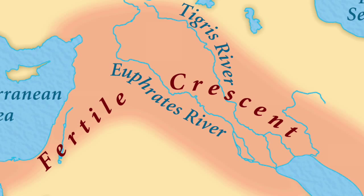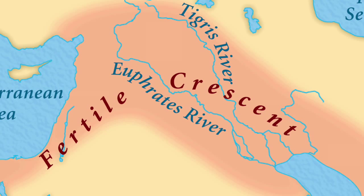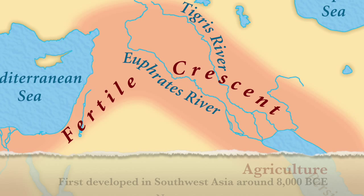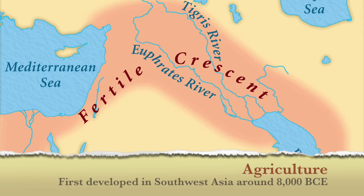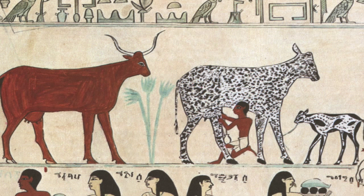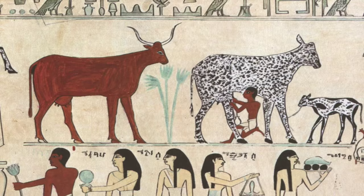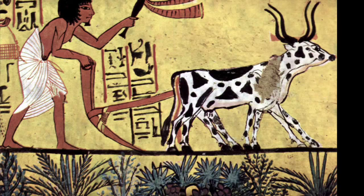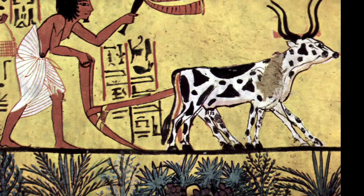Around 8,000 BCE, people in an area known as the Fertile Crescent — modern-day Turkey and Iraq — developed a new way of life that would transform humans and the planet Earth forever. These people discovered that they could control their food supply by domesticating animals that they hunted and planting the seeds of wild plants that they gathered.